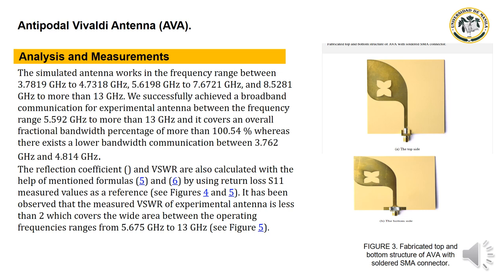We successfully achieved a broadband communication for the experimental antenna between the frequency range of 5.592 GHz to more than 13 GHz, with an overall fractional bandwidth percentage of more than 100.54%. There also exists a lower bandwidth communication between 3.762 GHz and 4.814 GHz.